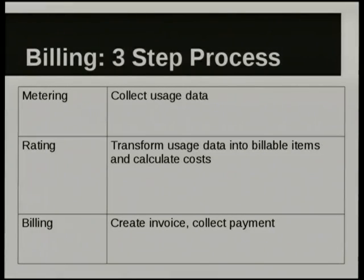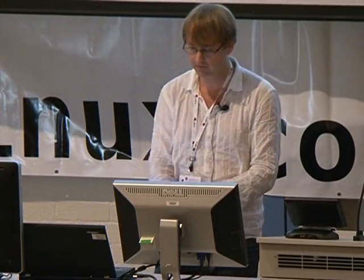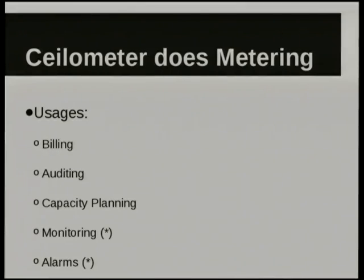Billing is a three-step process. First of all, you've got to collect data — you do the metering part — and provide that to the next step, which is rating. Here you get the usage information with your own conversion, and you could basically calculate some kind of cost. It doesn't have to be financial; you could convert it to anything you want. And then, if you're doing billing, you create the invoice, collect payment, et cetera. Solometer does the metering part, so just collecting usage information. You can use that for billing, also auditing, capacity planning, and we've got plans for monitoring and alarming as well.